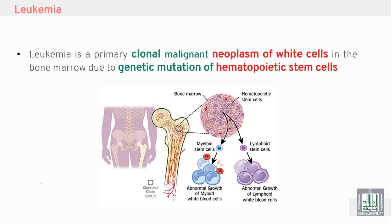Leukemia is a primary clonal malignant neoplasm of white blood cells. White blood cells start formation in the bone marrow, from the red marrow, arising from hematopoietic stem cells.